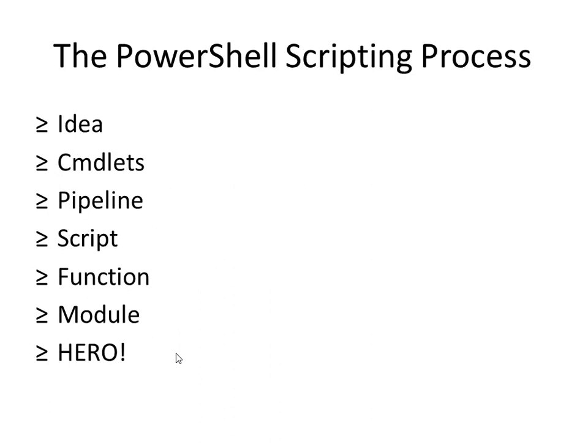Here is the PowerShell scripting process from start to finish. I've got an idea — I've got to automate something. I start out at the console tinkering with commandlets, trying to find where I'm going to get that information. Next I move into the pipeline and start rolling things together into one big line of code. Then I move it into the ISE and make a script file. I can take that code and put it into template functions, then put those functions in a module — creating my own commandlets. That makes me a PowerShell script hero.